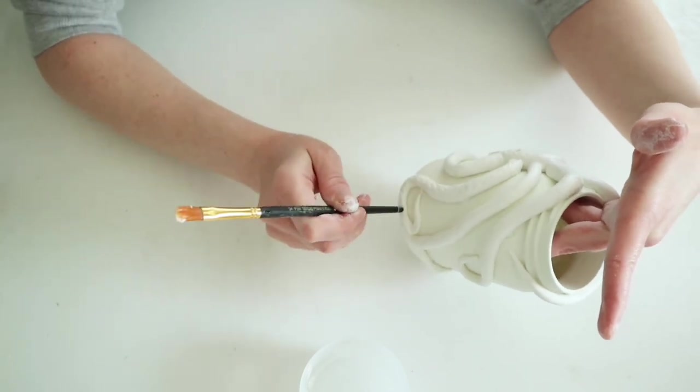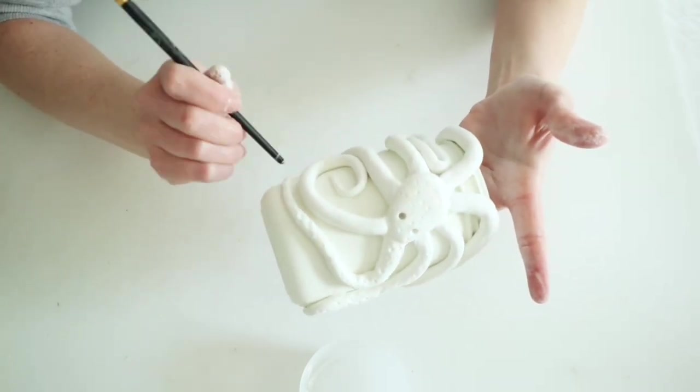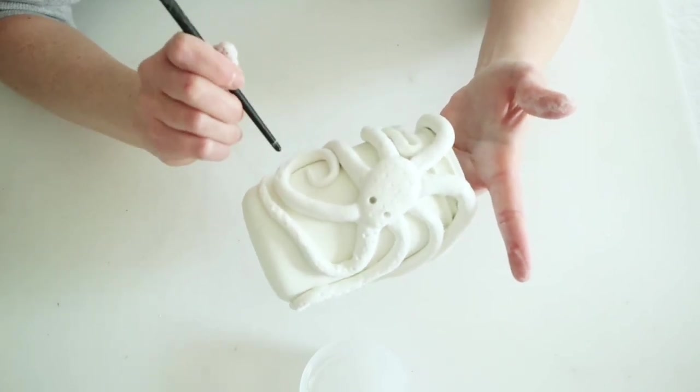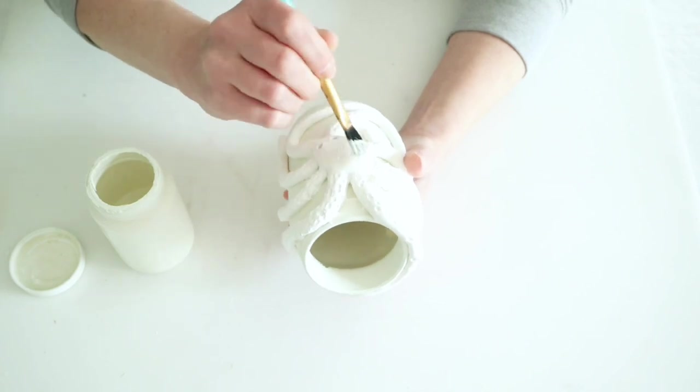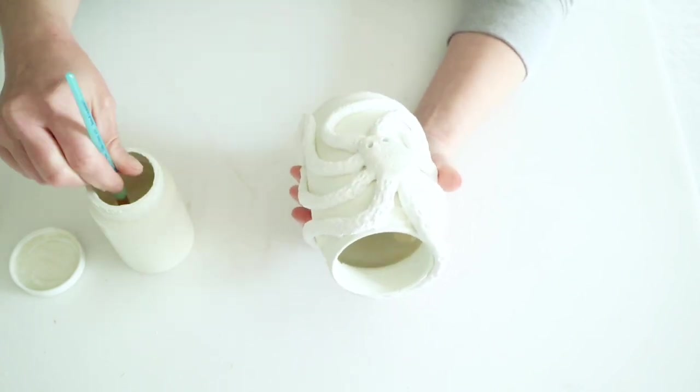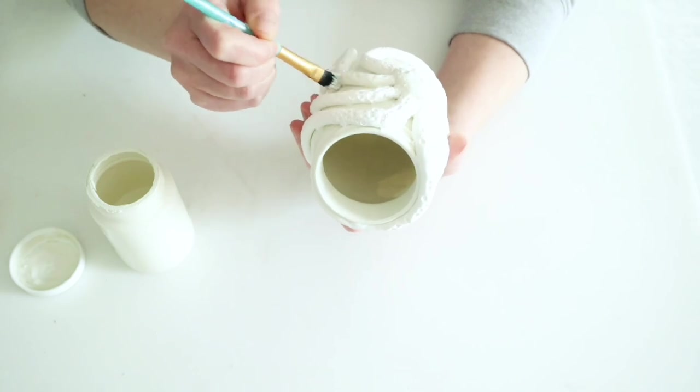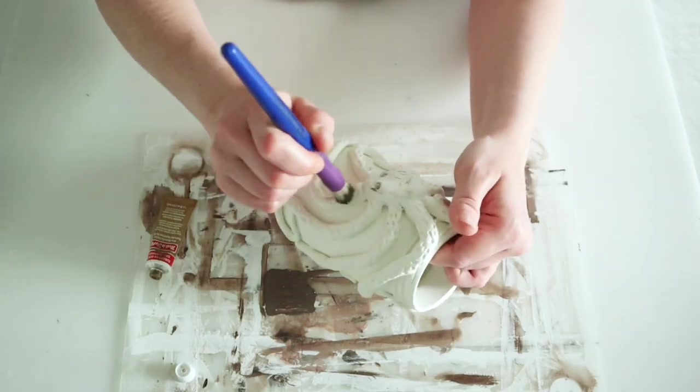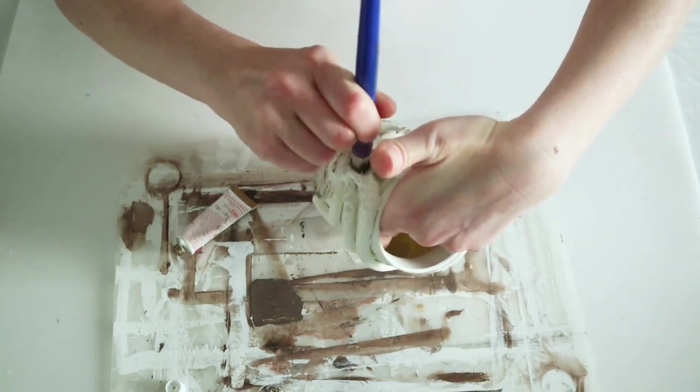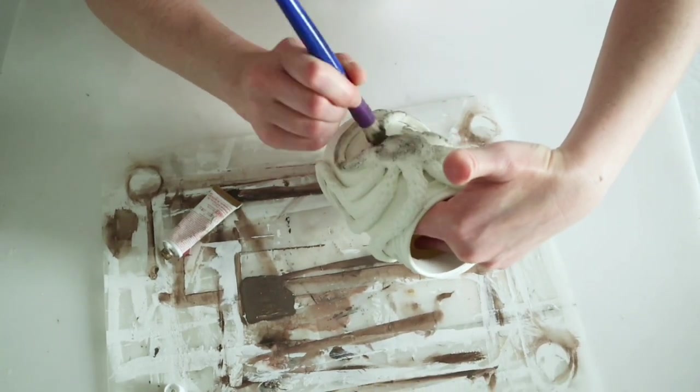I also just kind of tapped over the head and all the legs to make a texture for the octopus. I waited for the clay to completely dry for about 24 hours, and then I went back in and painted over the octopus with that same plaster color paint, and then I went in with some of my European Gold Rub and Buff and just went over the octopus.